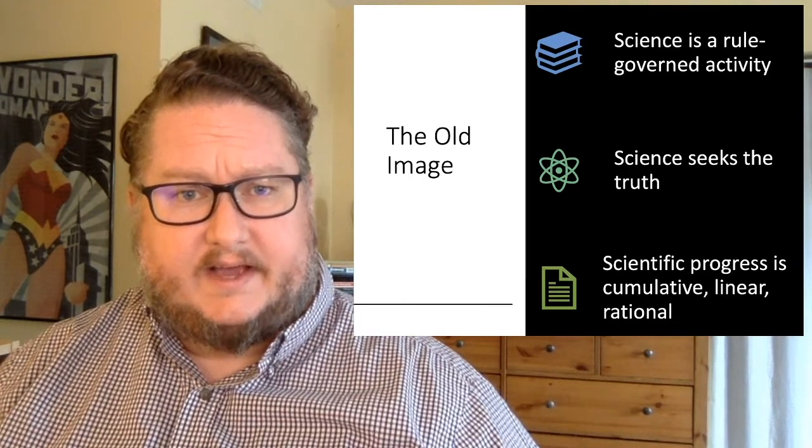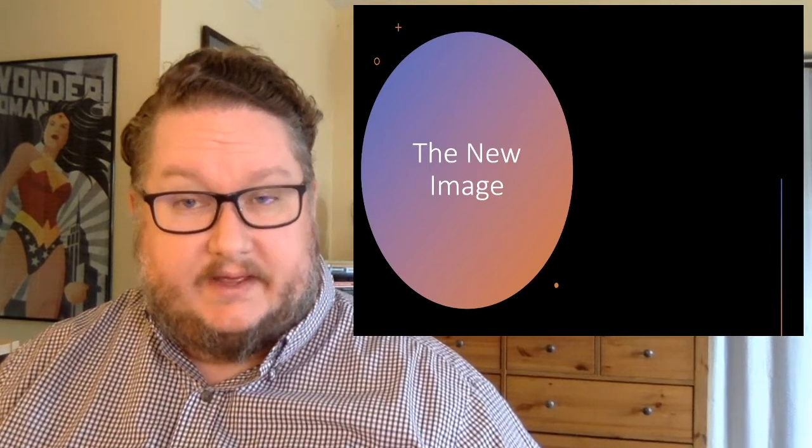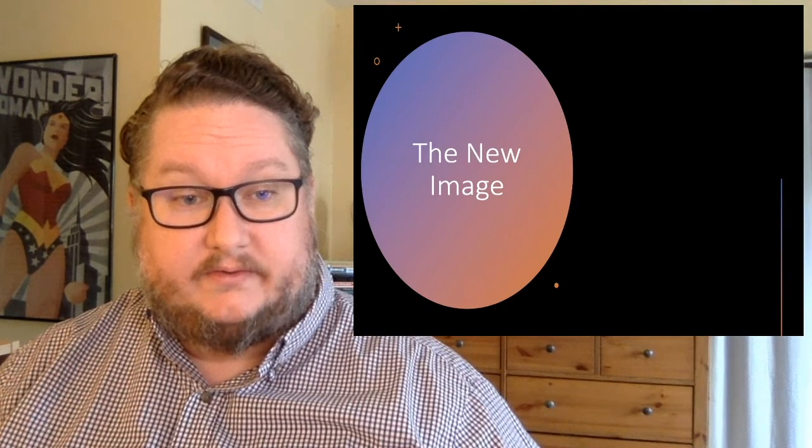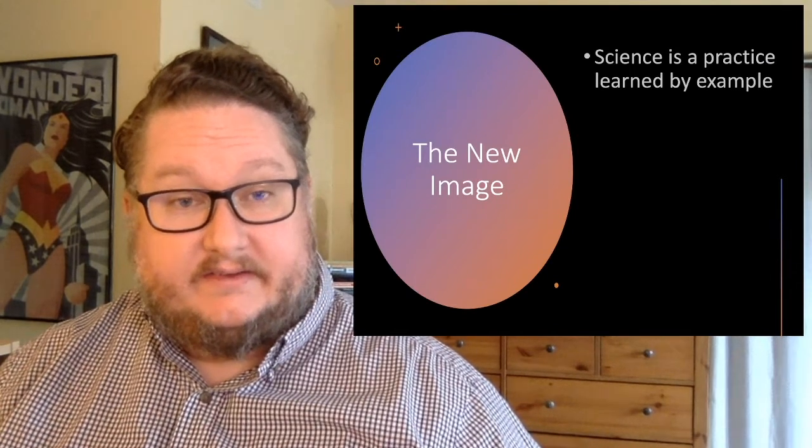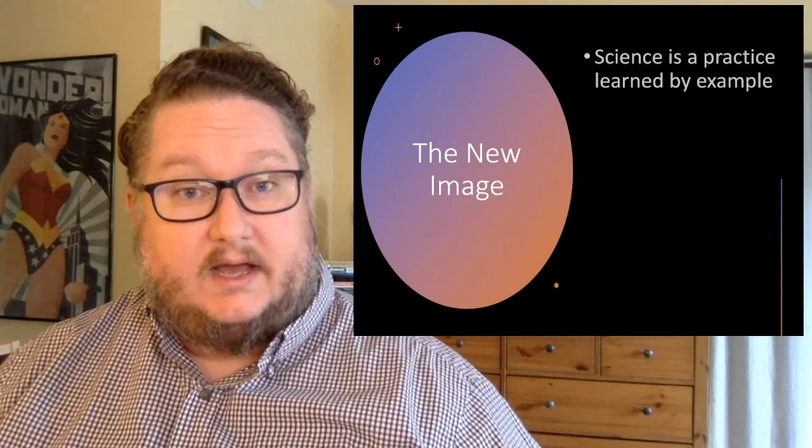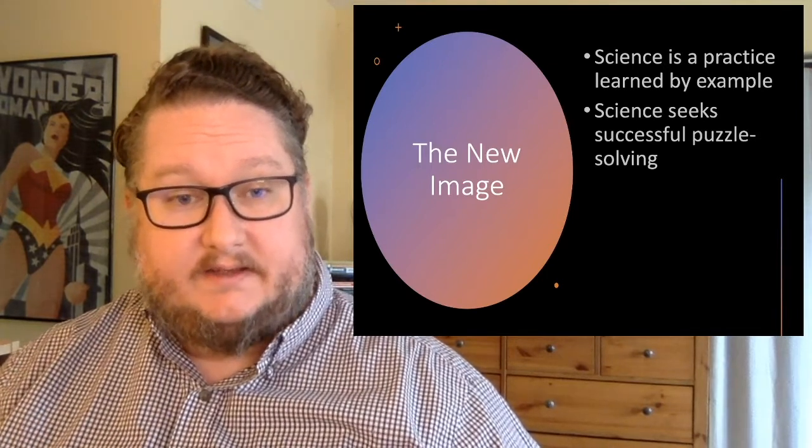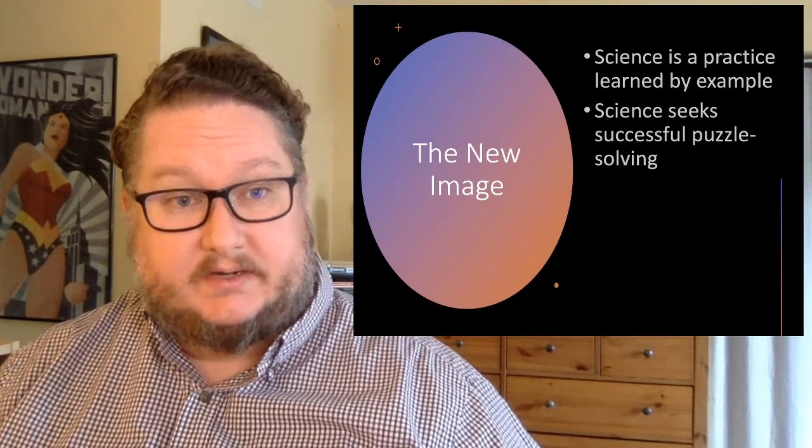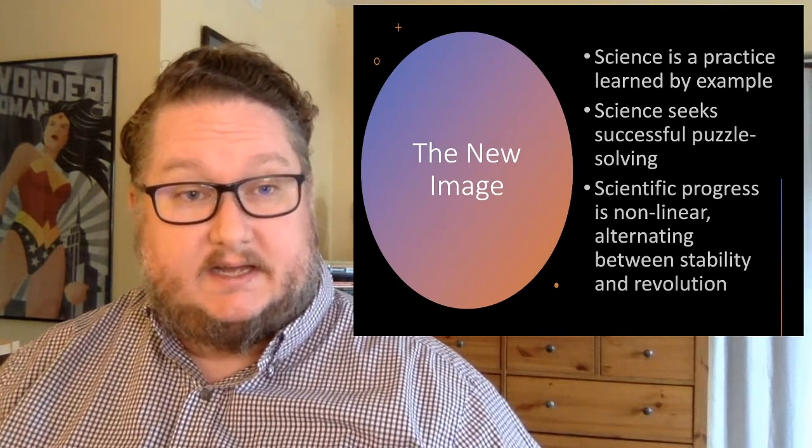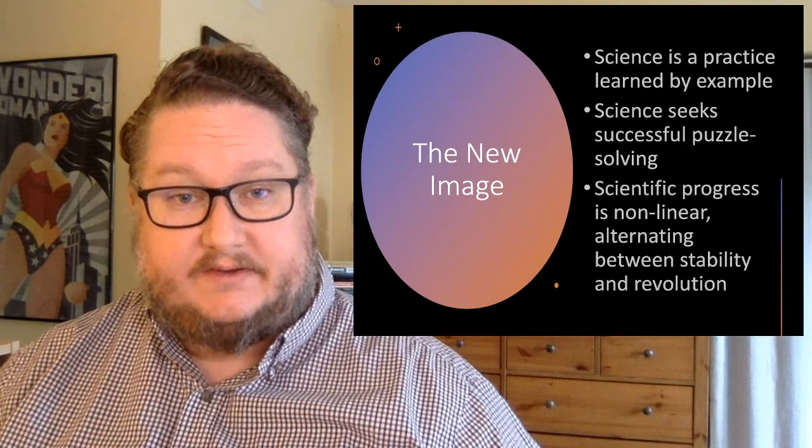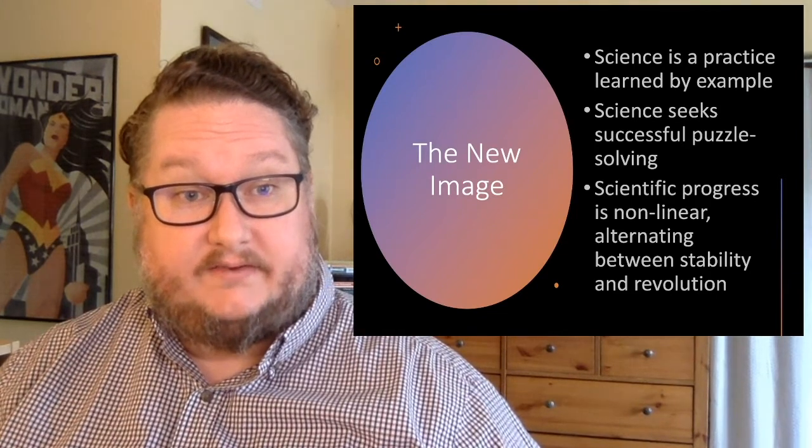That's sort of the image of science that Kuhn thinks is not defensible in the context of history. Looking at the history of science, Kuhn articulates then a new image. So what's the new image of science that Kuhn thinks we're going to be transformed by? Well, on the one hand, according to this image, science is a practice that is learned by example. On the other hand, science seeks successful problem solving or puzzle solving rather than truth per se. And then scientific progress is non-linear. It's not a process of steady accumulation, but it's an alternation between relatively steady and stable periods of the growth of knowledge and revolutionary periods.